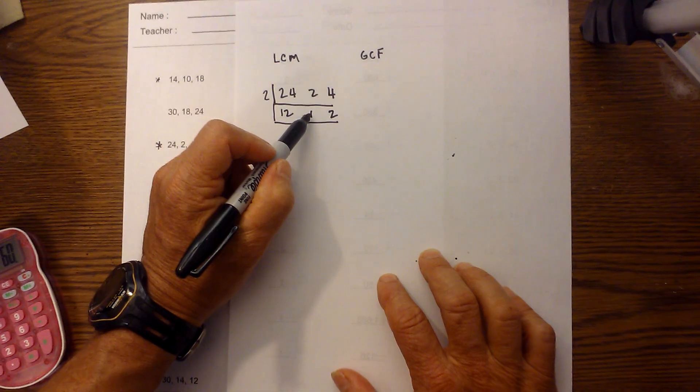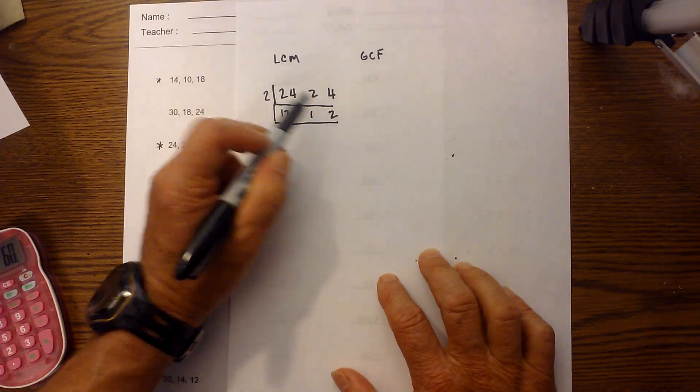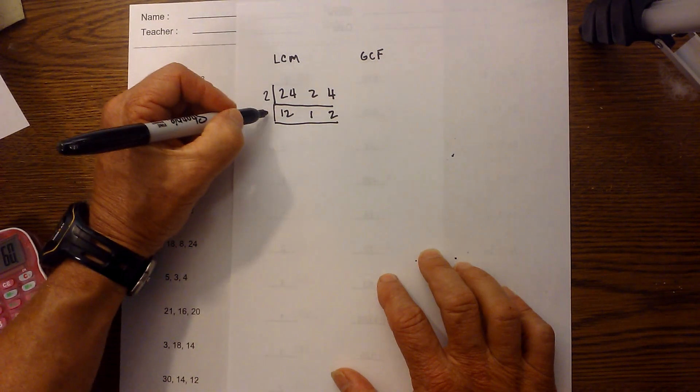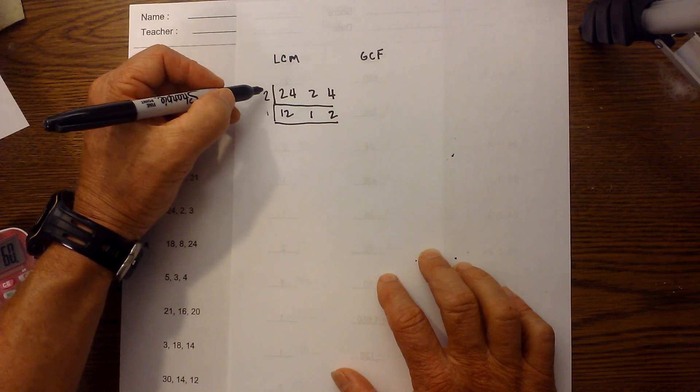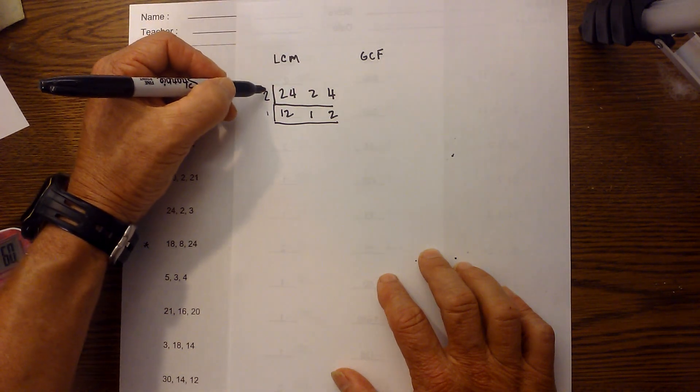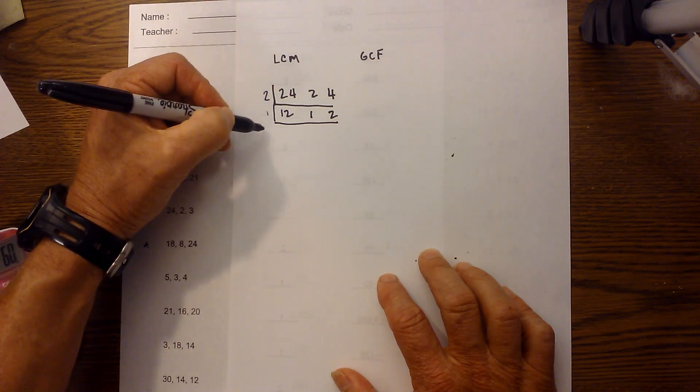I then draw another box underneath. I know the only number that will multiply into these three is 1, so I can write a 1 here. For the greatest common factor you just multiply straight down. 2 times 1 is 2, so the GCF is 2 on this particular problem.